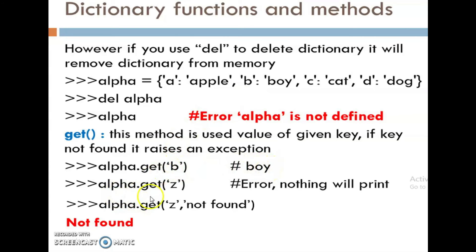Alpha.get('z') — what will happen here? It will produce an error because the 'z' key is not present in this alpha dictionary. Then alpha.get('z', 'not found') — we will get the answer as 'not found'. The get method is used to print the value of a given key; if the key is not found, it raises an exception.